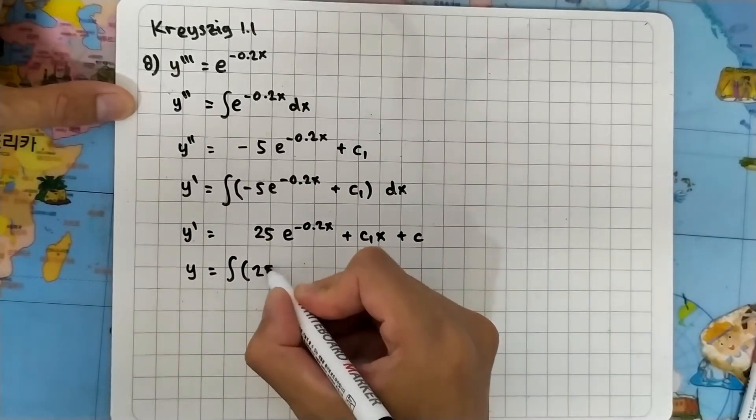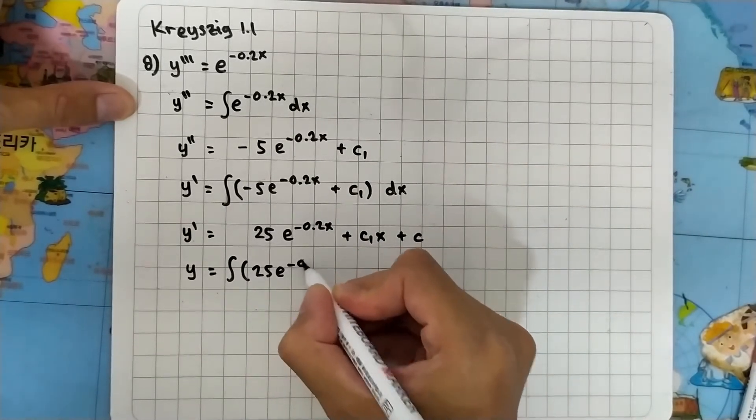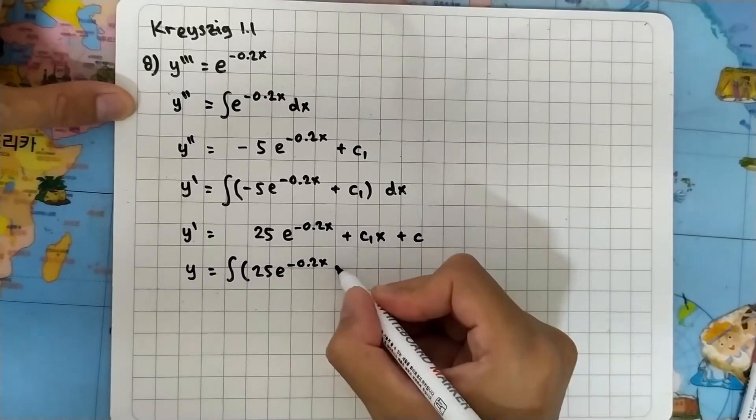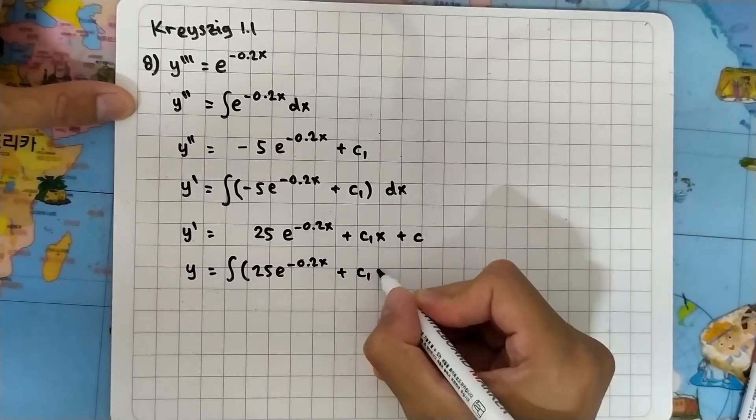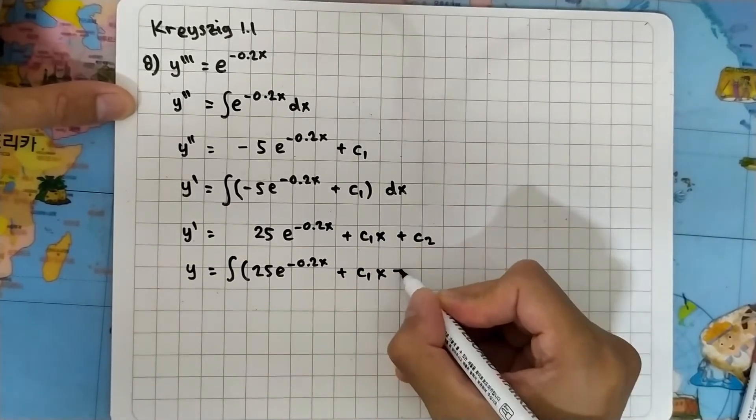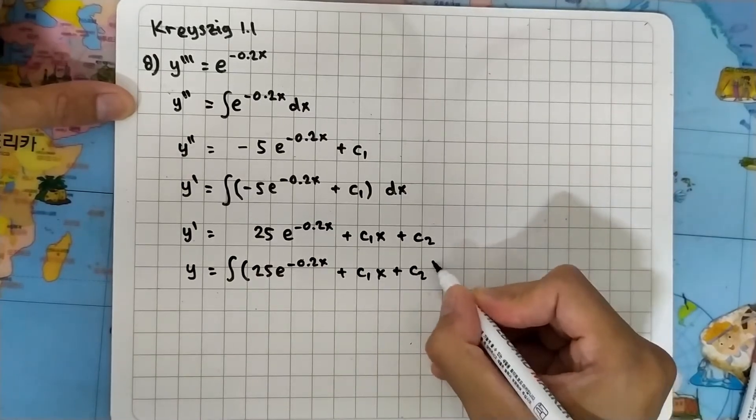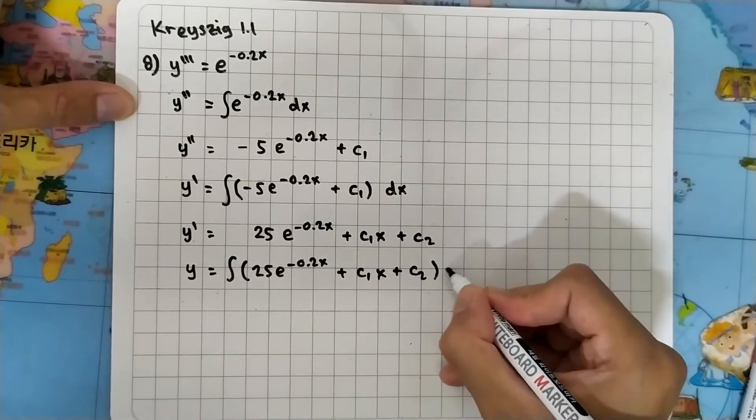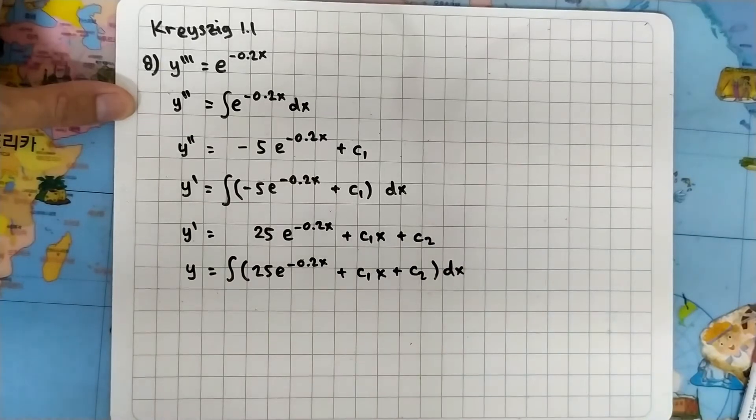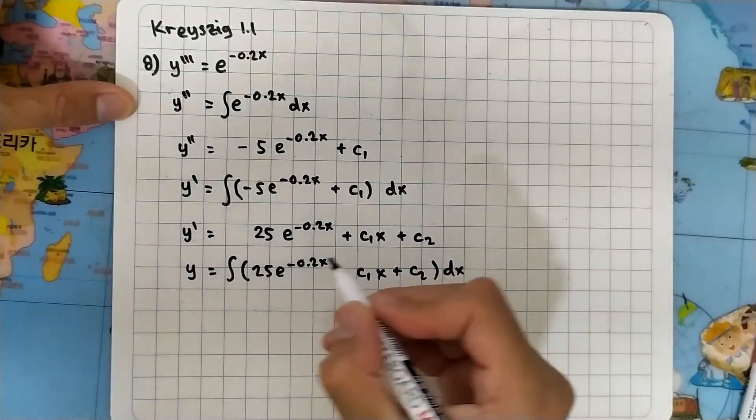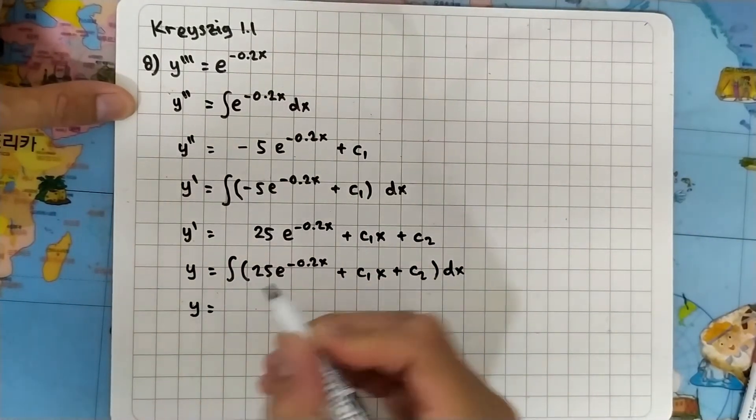25 e to the minus 0.2x plus c1 x plus c2. And let's integrate this to get y, which will equal minus 25 divided by 0.2 times e to the minus 0.2x.